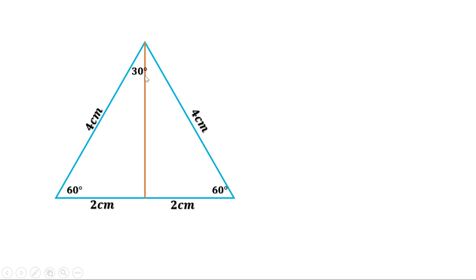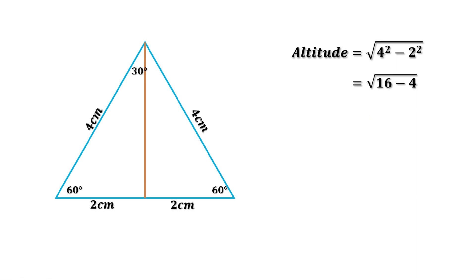This gives a right-angled triangle since the perpendicular makes a 90-degree angle, and we know the hypotenuse and base. The altitude equals root of hypotenuse squared minus base squared, which is root of 4 squared minus 2 squared, equals root of 16 minus 4, equals root 12, which equals 2 root 3. So this length is 2 root 3 centimeters. This is a triangle with angles 30 degrees, 60 degrees, and 90 degrees; if the hypotenuse is 4 centimeters, the other sides are 2 centimeters and 2 root 3 centimeters.